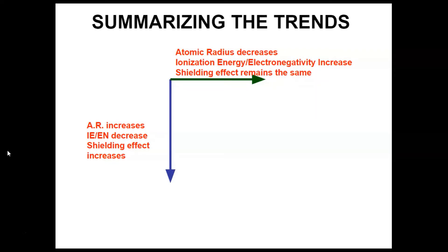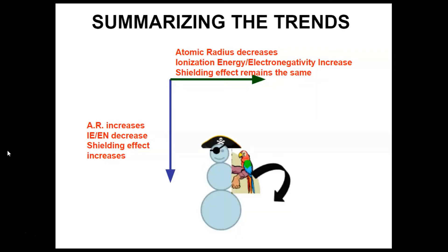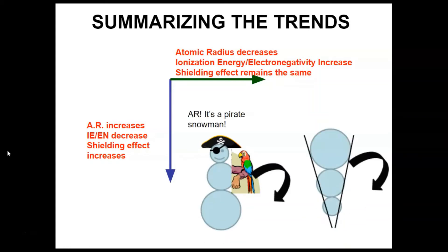Here's a way to remember these trends using some clip art. This is a pirate snowman — pirates say 'arrr,' so this is the trend for atomic radius. It increases as you go down, and if that snowman falls over following the arrow, it decreases going to the side. This is an IE-scream cone — ionization energy and electronegativity. It decreases down, and when it falls over to the side, it increases across.